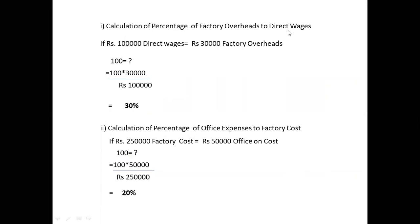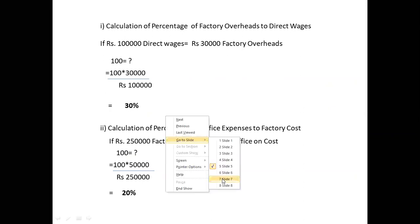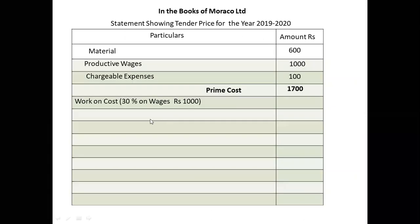Add factory overheads: factory overhead is 30% of direct wages. Direct wages in the tender are 1,000 rupees. So 30% of 1,000 rupees = 300 rupees factory overhead.